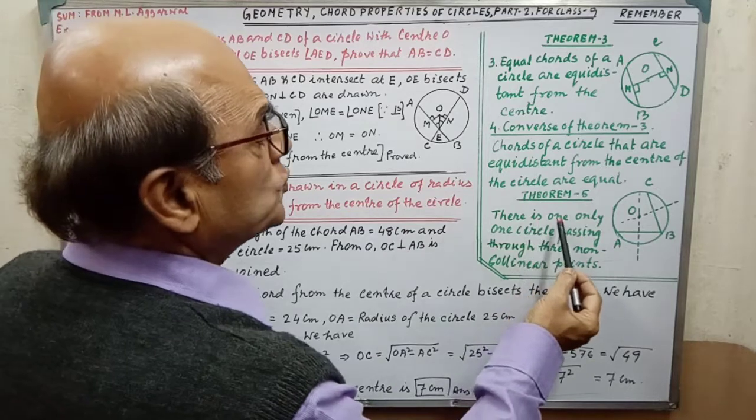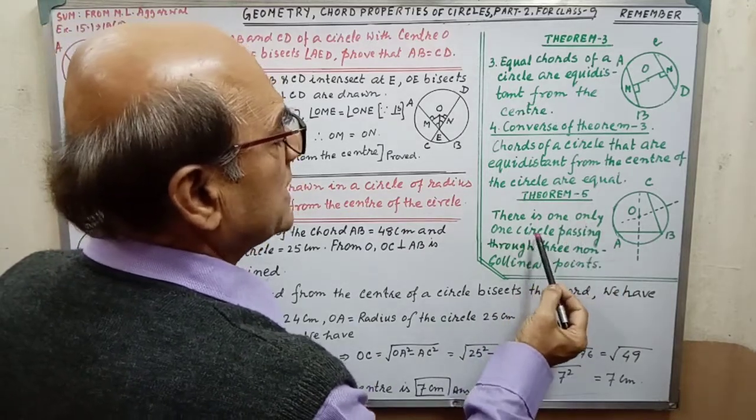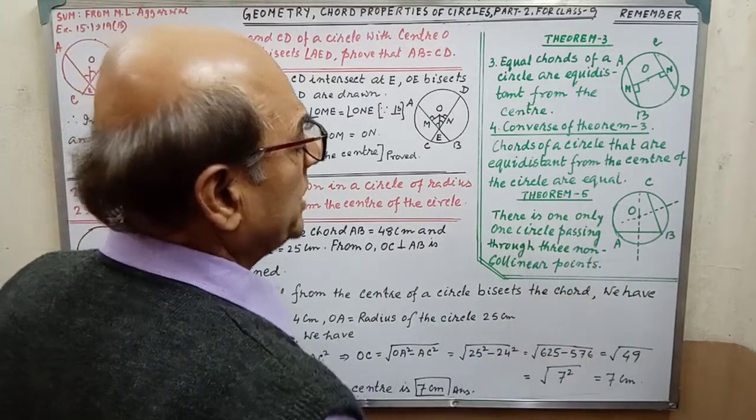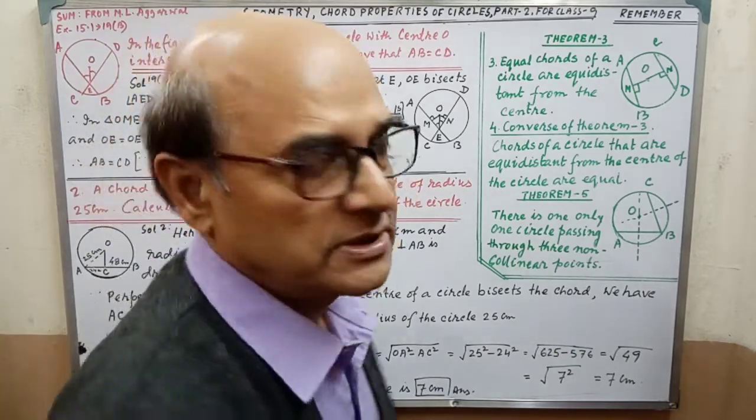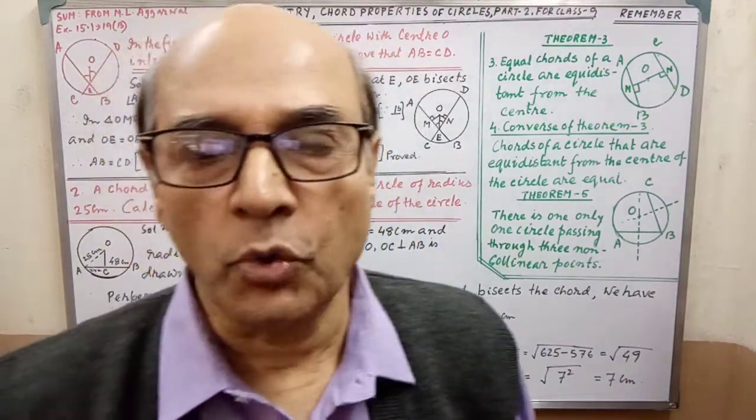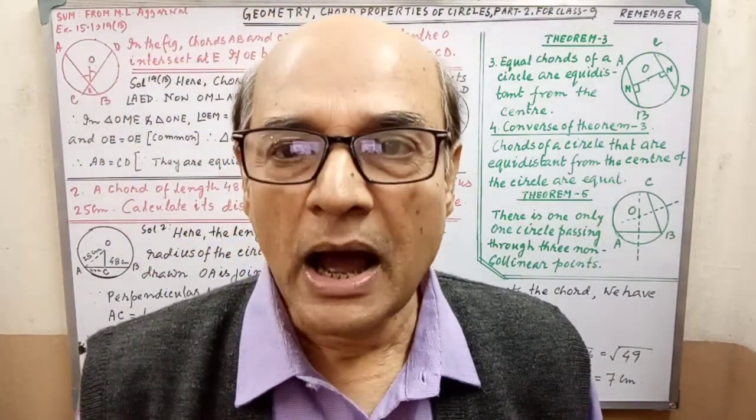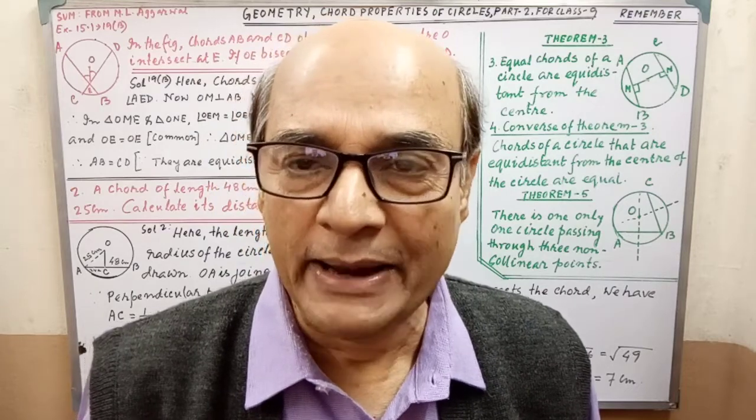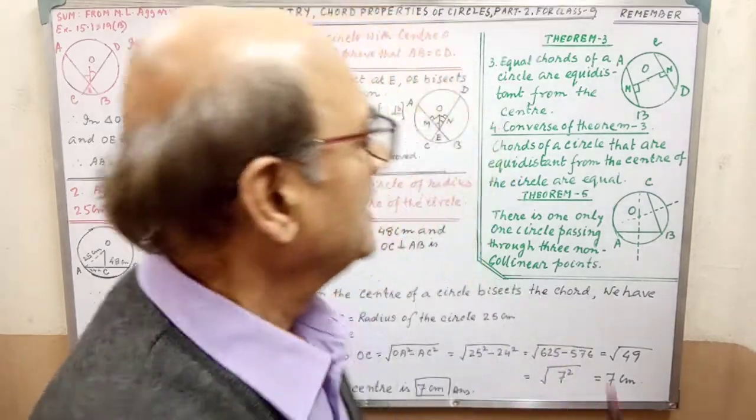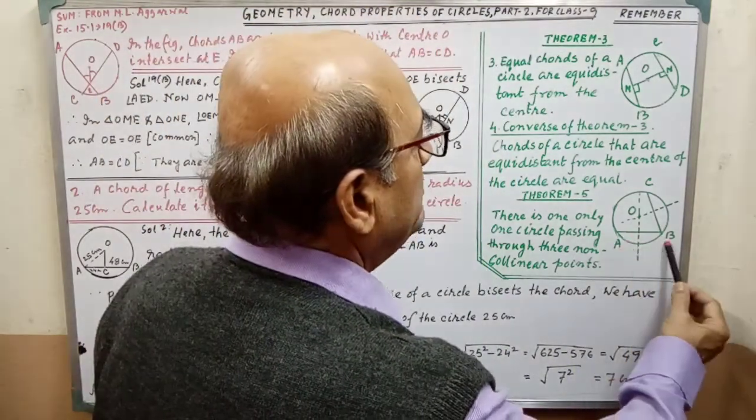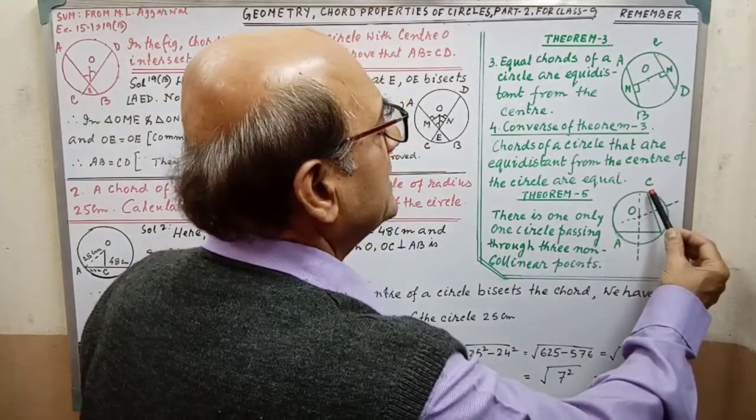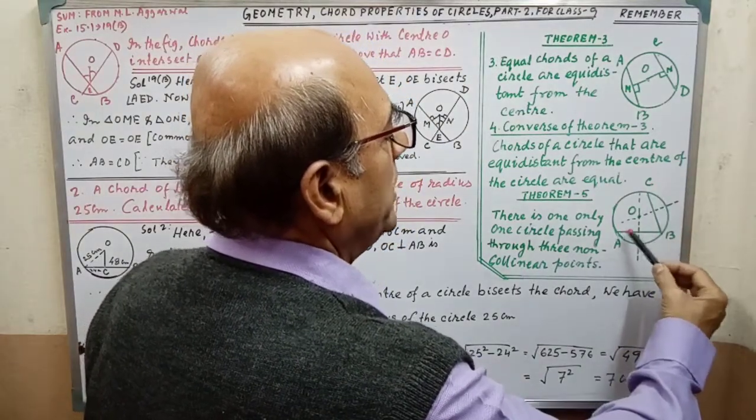And next, that is Theorem 5. There is only one circle passing through three non-collinear points. Non-collinear points, when the points are not lying in the same straight line. The three points A, B, C, they are not lying in the same straight line.